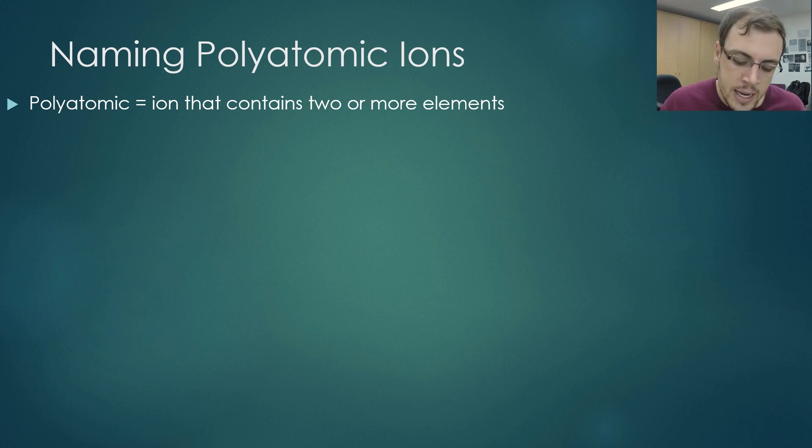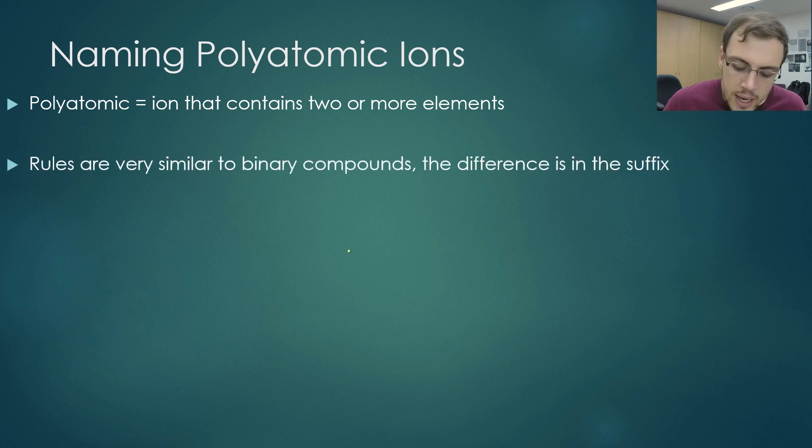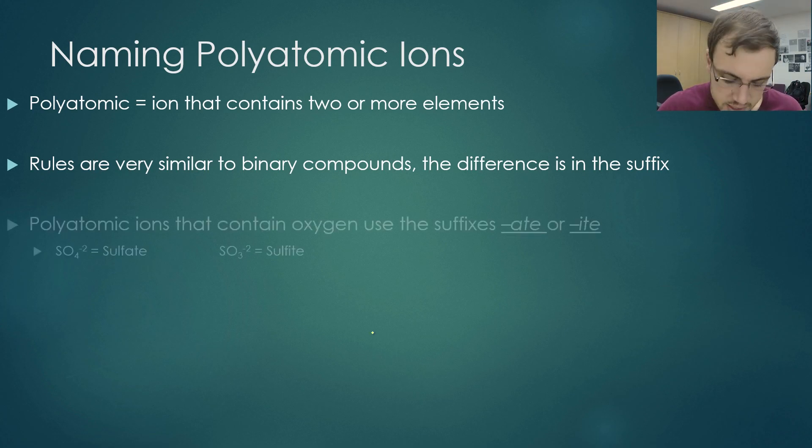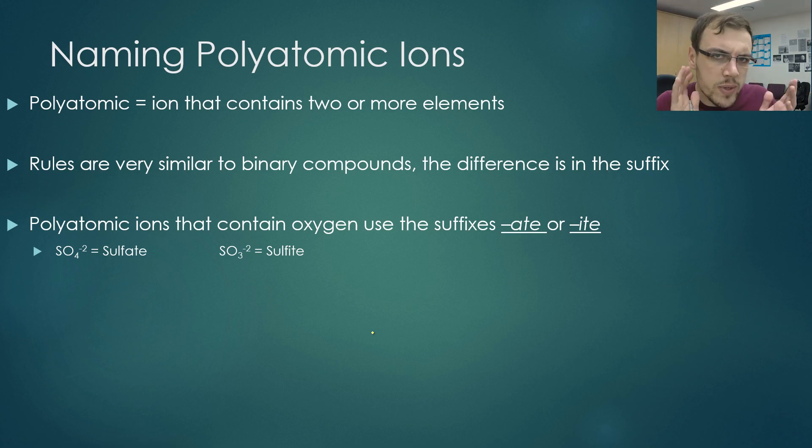Now let's have a look at naming polyatomic ions. Poly simply means multiple. Polyatomic is an ion that contains two or more elements. The rules here are very similar to the binary compound. These are the ones that we looked at before. However, the difference is in the suffix. This can be a little bit of a mind twister here, but bear with me and we'll get through it.